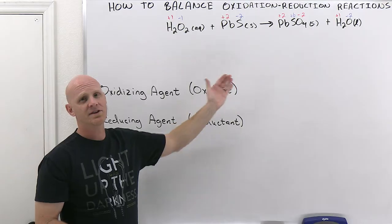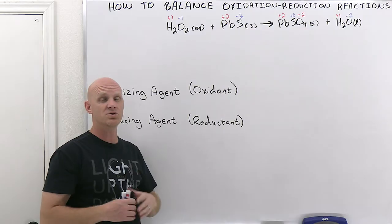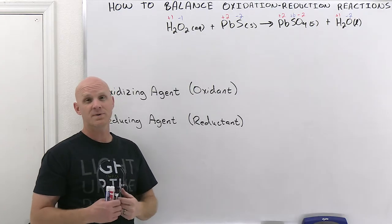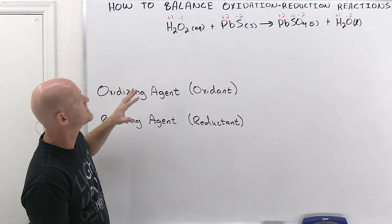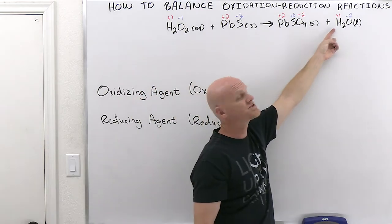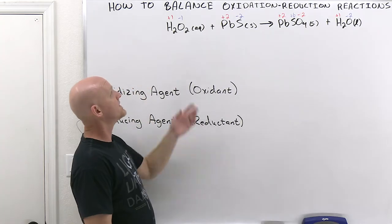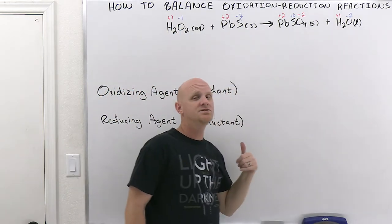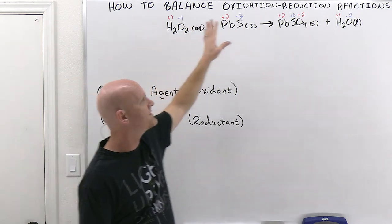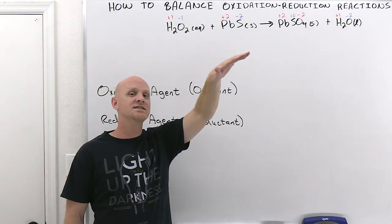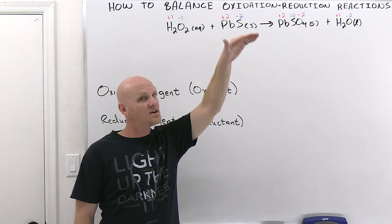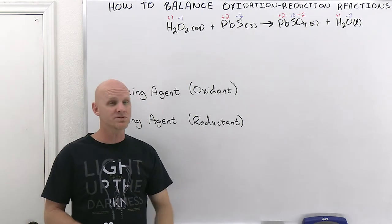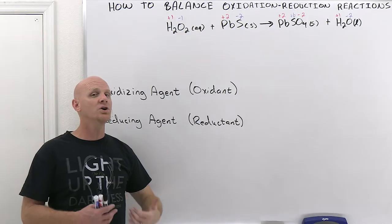Now we look at who's changing oxidation states, because that's the hallmark of a redox reaction. Hydrogen stays at +1 on both sides — no change. But oxygen goes from −1 in hydrogen peroxide to −2 in two places on the product side. Going from −1 to −2, its oxidation state is getting more negative — that's going down — and that's why they call it being reduced. So oxygen is the element being reduced.